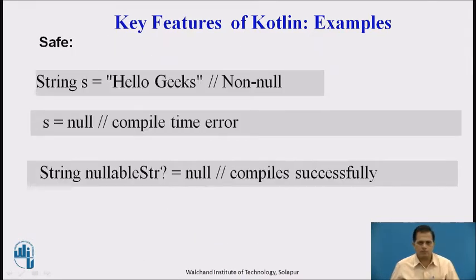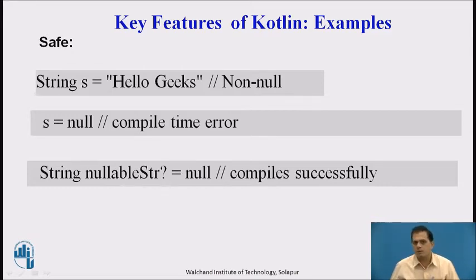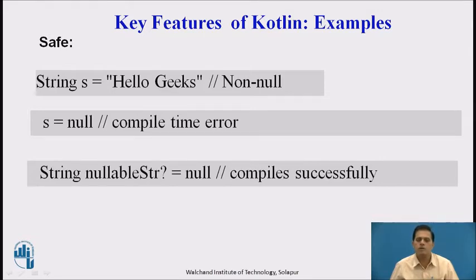The second example is the safe feature. It provides safety from null pointer exceptions by supporting nullability as part of its type system. Every variable in Kotlin is non-null by default. Here, 'val a: String = "hello"' is a non-null declaration. But when we declare a variable as null directly, it will give a compile time error. Instead, the proper syntax is 'val nullableStr: String? = null', which the compiler understands and compiles successfully.